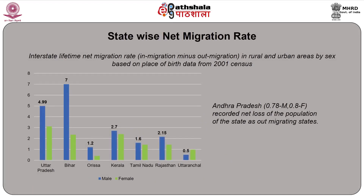When we talk about the flow of migration, the state-wise net migration rate is an important indicator. The interstate lifetime net migration rate — that is, in-migration minus out-migration — by rural and urban areas, categorized separately by sex based on place of birth data from the 2001 census, shows clear patterns. Among the major states, Uttar Pradesh followed by Bihar, Orissa, Kerala, Tamil Nadu, Rajasthan, Uttaranchal, and Andhra Pradesh have recorded net loss of population and are classified as out-migration states.